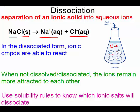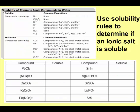We use solubility rules to know which ionic salts will dissociate. You will be provided a solubility chart. You need to know how to read it. It says that the top ions are soluble unless they're paired with one of the listed exceptions. All of these ions on the list are negative ions, and the exceptions are where you see the positive ions.